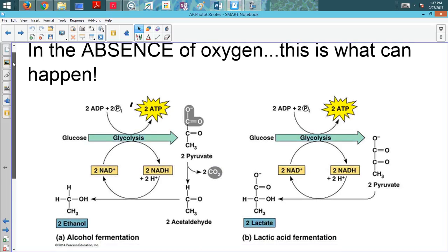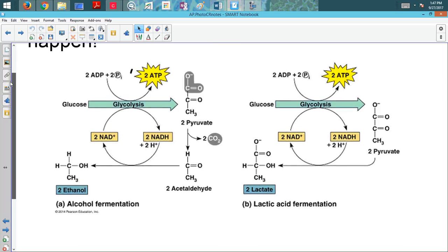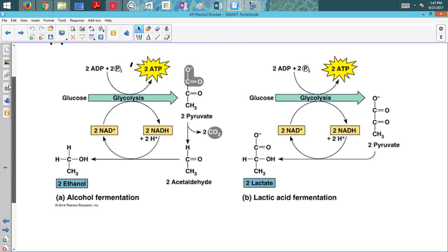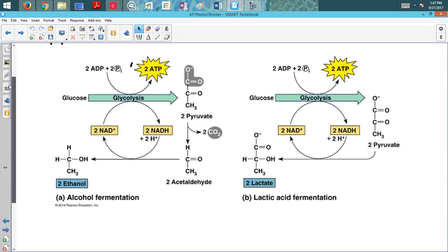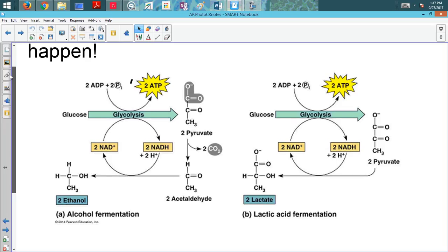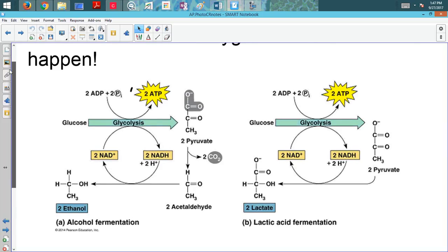So in our cells, this can happen, and also in the cells of organisms like certain prokaryotes that live in environments where there simply is no oxygen. So what happens after glycolysis is what we're talking about here. In the absence of oxygen, we start with glycolysis, just as we learned it.